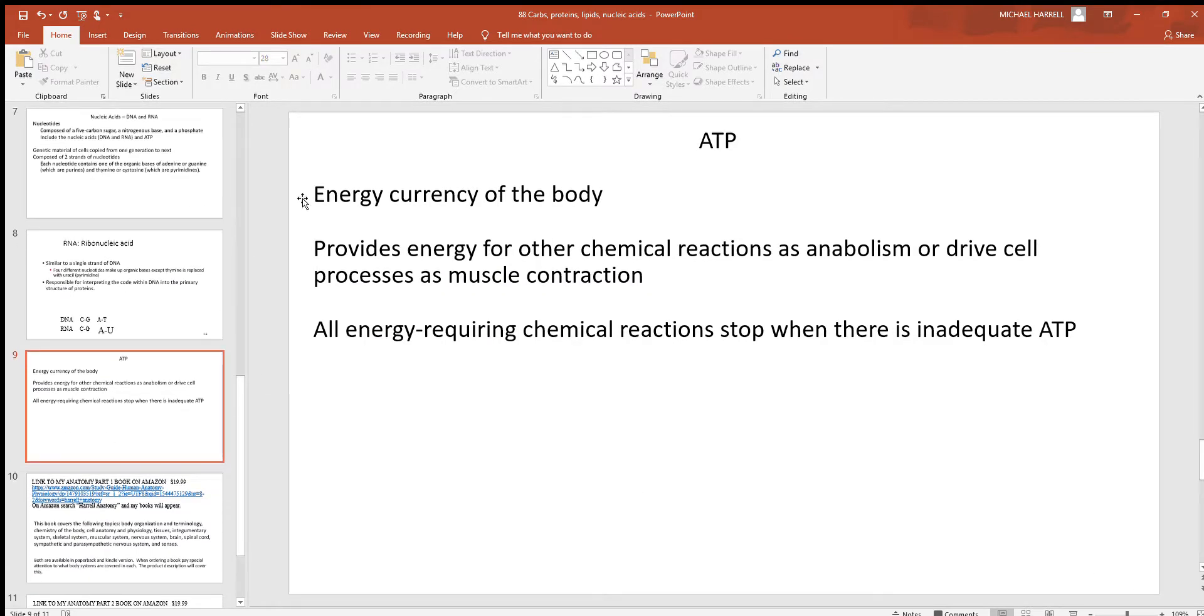And then lastly here again we got this ATP, this energy currency of the cell. Again that ATP for cells powers what they do. It's like the gasoline for your car right there. Got to have that energy if you want those cells to do anything. So that provides energy for many chemical reactions. We'll see more of those. Muscle contractions, just one of them. And all energy requiring chemical actions stop when there's no ATP. You don't have ATP in cells, they're going to die soon afterwards and you'll be in big trouble.